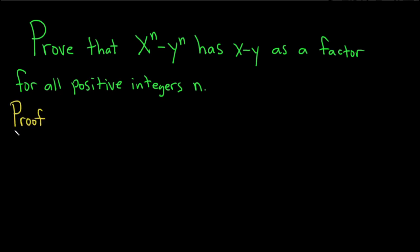So proof. We're going to do this using a proof by induction. Proof by induction is a method that allows you to prove a statement about a positive integer n. So our statement is right here. This is going to be our statement. I'll give it a name, I'll call it S sub n. So the statement is that x to the n minus y to the n has x minus y as a factor.